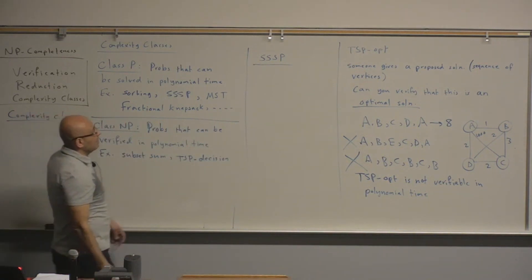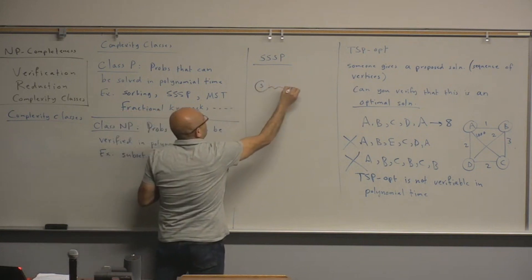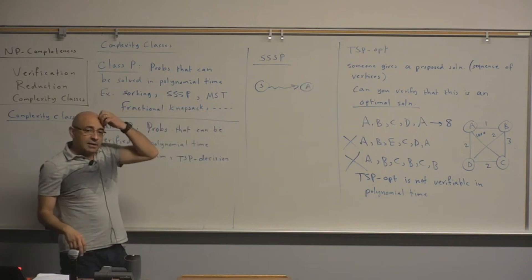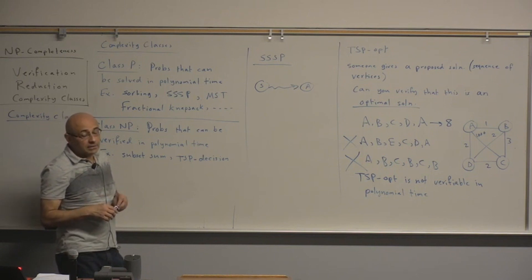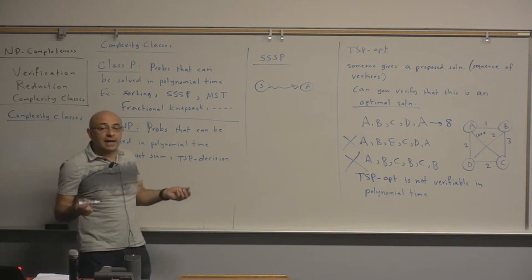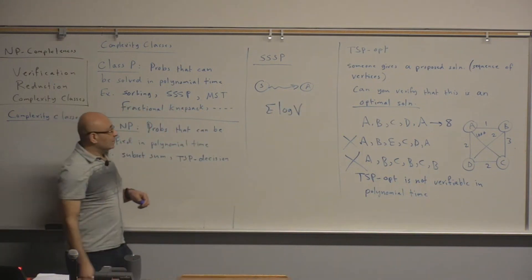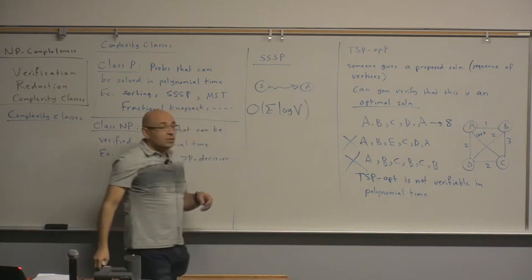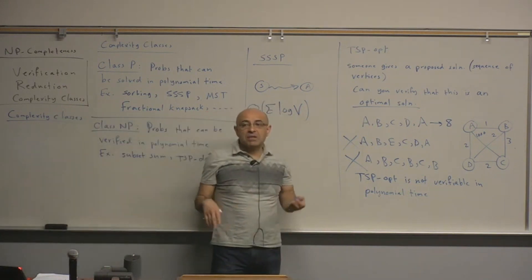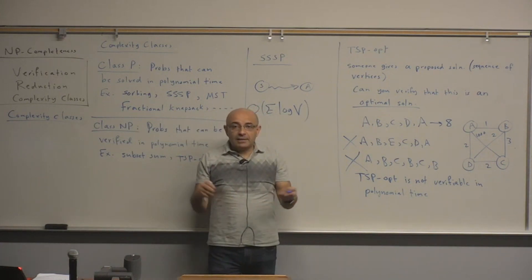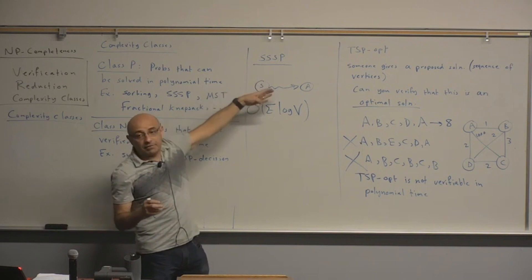If someone gives you a path and proposes a solution, telling you this is the shortest path from S to A — can you verify that this path is indeed optimal in polynomial time? Yes, you can. You can just apply Dijkstra's algorithm in O(E log V), which is certainly polynomial time, and it will give you the optimal solution. If you know the optimal solution and someone gives you a proposed solution, you can verify that the proposed solution is legal.